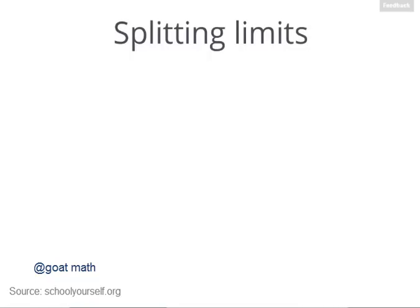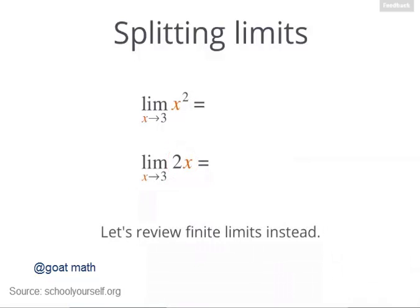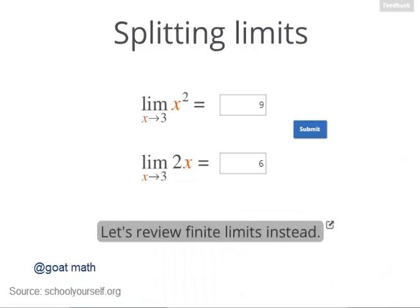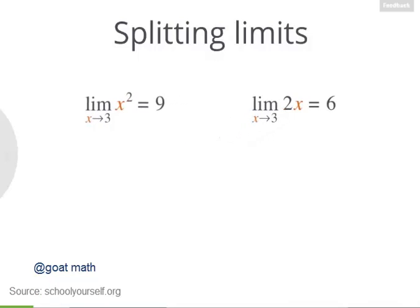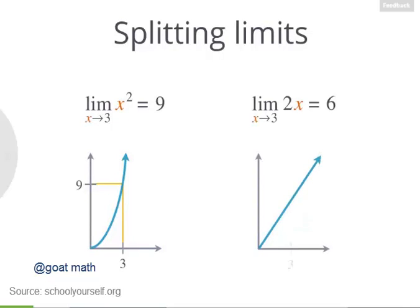Let's see what happens when you have limits of more complicated functions. The limit of x squared as x approaches 3 equals 9, and the limit of 2x as x approaches 3 equals 6. Saying this limit equals 9 means that as x gets closer and closer to 3 from either side, x squared approaches 9. Similarly, as x gets closer and closer to 3 from either side, 2x approaches 6. These limits are not saying anything about plugging in a value of 3 for x — they're just saying that as x gets very, very close to 3, x squared approaches 9 and 2x approaches 6.